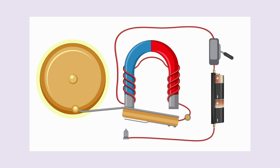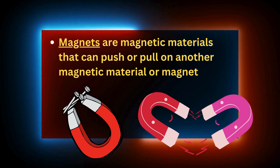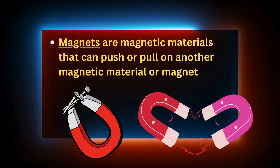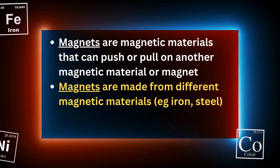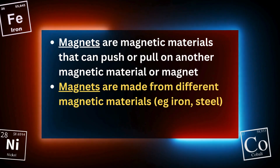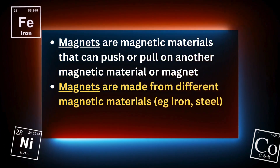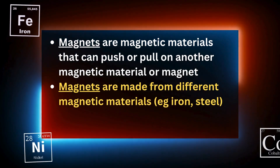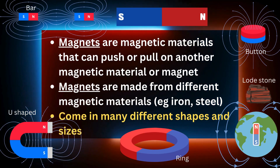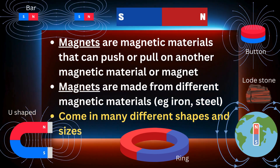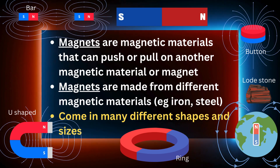Magnets are magnetic materials that can push or pull on another magnetic material. A magnet — they're made from magnetic materials like iron or steel. They come in many shapes and sizes; some are naturally occurring, called lodestones.